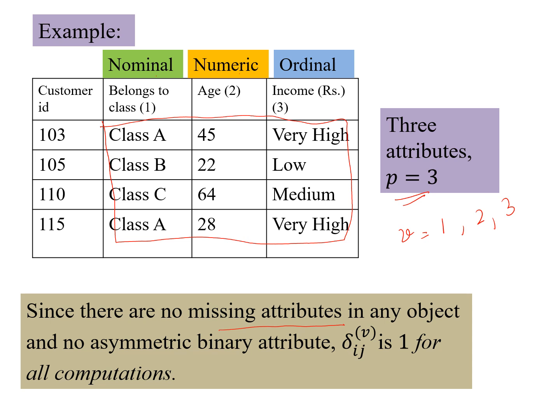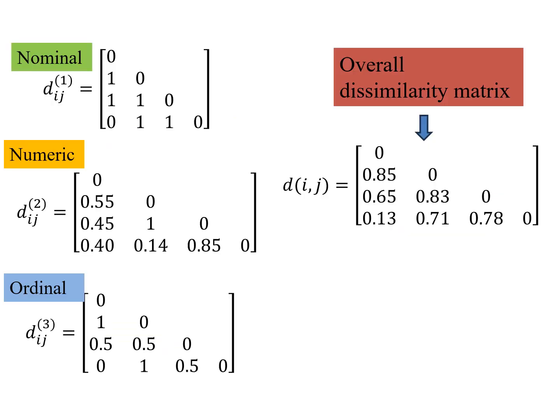Our delta ij would be one for all the computations. So we can proceed here by computing the dij, this dij, for the first attribute, for the second attribute, first attribute is considering the nominal, second considering the numeric, and third as the ordinal. And we get these values. The method of computations are same as discussed in our previous videos, in this playlist.